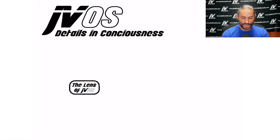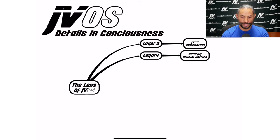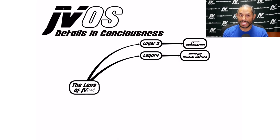The lens of Jiu-Jitsu through JVOS: the first layer is identifying that we are looking at this in a different way, which I call JVOS installation. Layer four is identifying crucial battles — these are the battles that you must win in order to advance or survive. There are a lot of battles that are kind of irrelevant; I focus on and teach through the ones that are truly important.